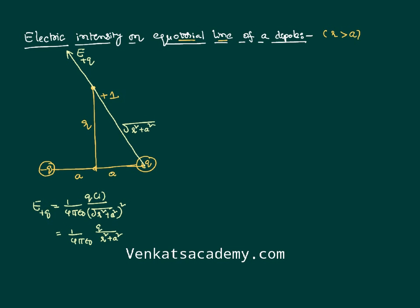Similarly, the negative charge applies a force of attraction, not repulsion, so its direction is different. You may notice that since the charges are equal in magnitude and the distances are the same, the magnitude of electric field intensity due to the negative charge is also the same. However, the two field vectors are not in the same direction — they make an angle theta each, so the total angle between them is 2 theta.